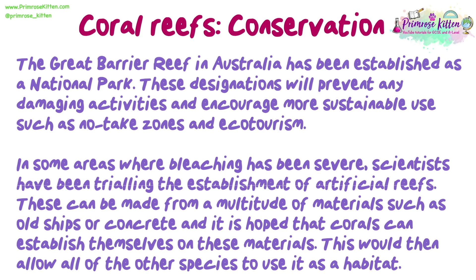In some areas where bleaching has been severe, scientists have been trialling the establishment of artificial reefs. These can be made from a multitude of materials, such as old ships or concrete, and it is hoped that corals can establish themselves on these materials. This would then allow all of the other species to use it as a habitat.